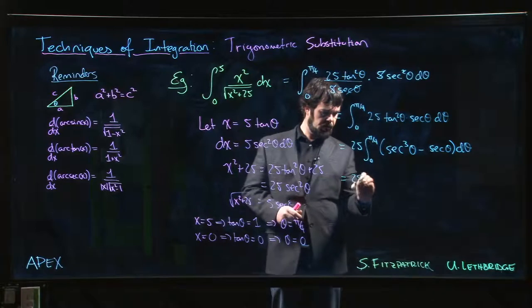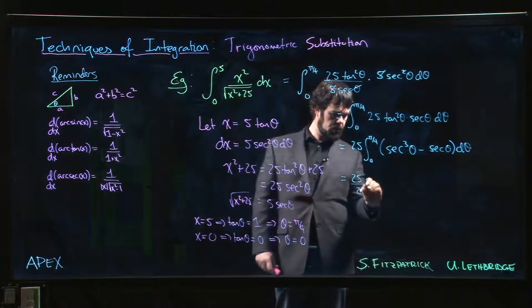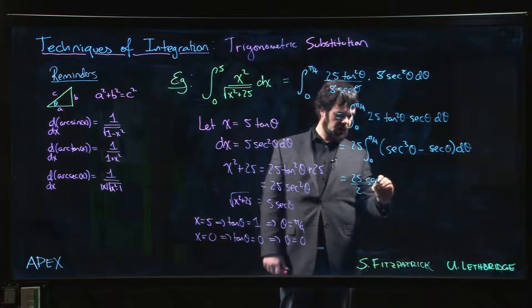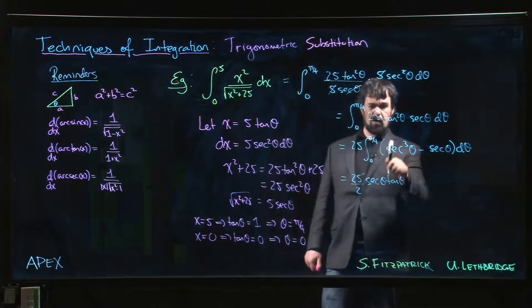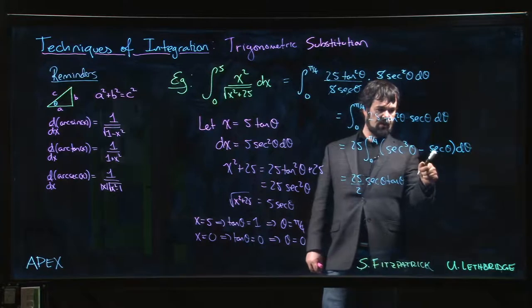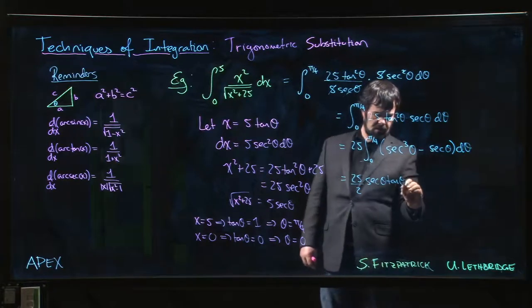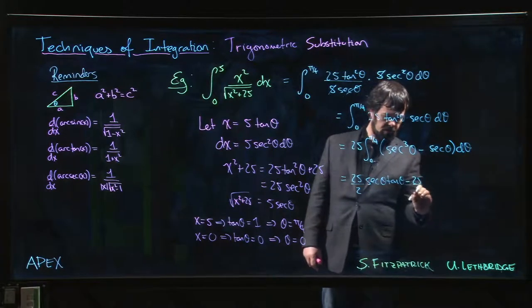So it's 25 over 2 secant theta tan theta. This one gives you half log of that whole mess, minus 25 over 2 log of secant theta plus tan theta.